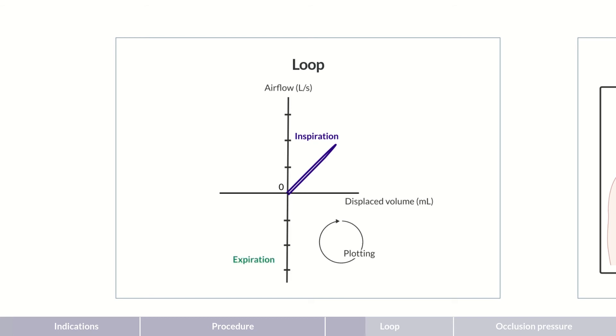Expiration occurs passively because the inspiratory muscles relax and lung tissue starts to contract again. Through this reduction in volume, the pressure in the alveoli increases and air flows out of the lungs.